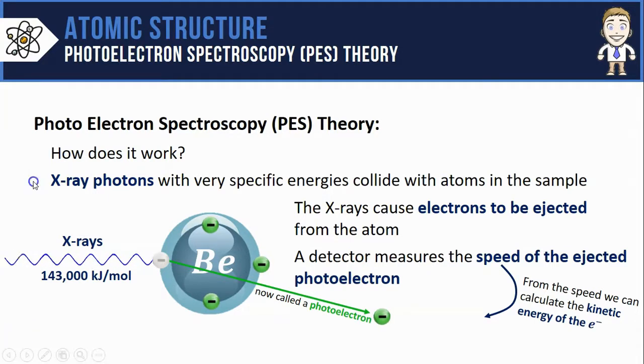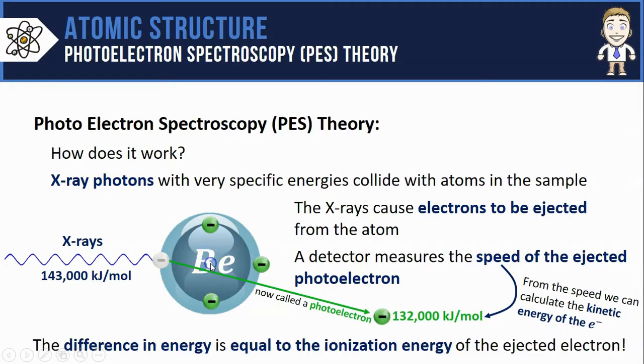In this case the ejected electron has 132,000 kilojoules per mole of energy. So notice that my x-rays came in with 143,000 kilojoules, but my ejected photoelectrons don't have all that same energy. In fact they have less. So that means somewhere along the way energy was lost. And that lost energy was the energy that was needed to break the attraction between that electron and the nucleus. In other words, the difference in the two energy values is equal to the ionization energy of the ejected electron.